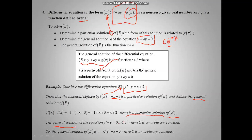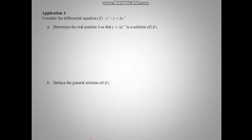Now we find the general solution of the reduced equation y prime minus y equal to 0. Using the formula c e minus ax, with a equal minus 1, the general solution is c e to the x. This is the general solution of the reduced equation. The general solution of E is the sum of T of x and c e to the x.